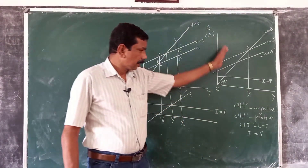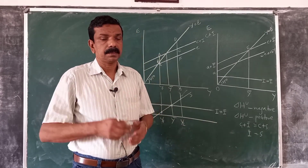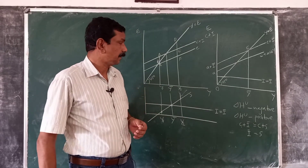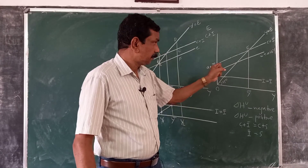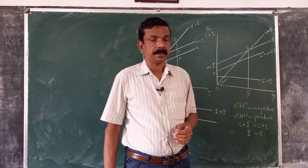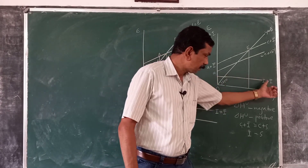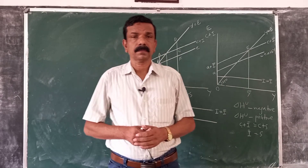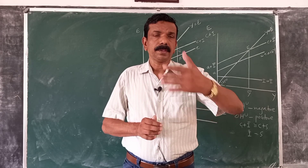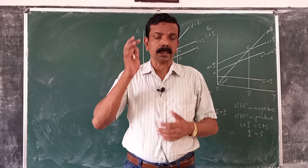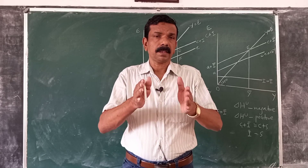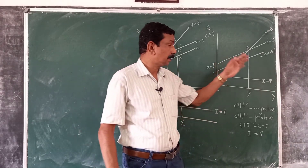This is how equilibrium level of income and output is determined in the simple Keynesian model of income determination, where equilibrium is determined by equality between aggregate supply and aggregate demand, and investment is assumed to be exogenous. This is how we determine equilibrium level of income at a point in time. In the next class, we will consider what happens to equilibrium level of income and output when there is a change in aggregate demand.